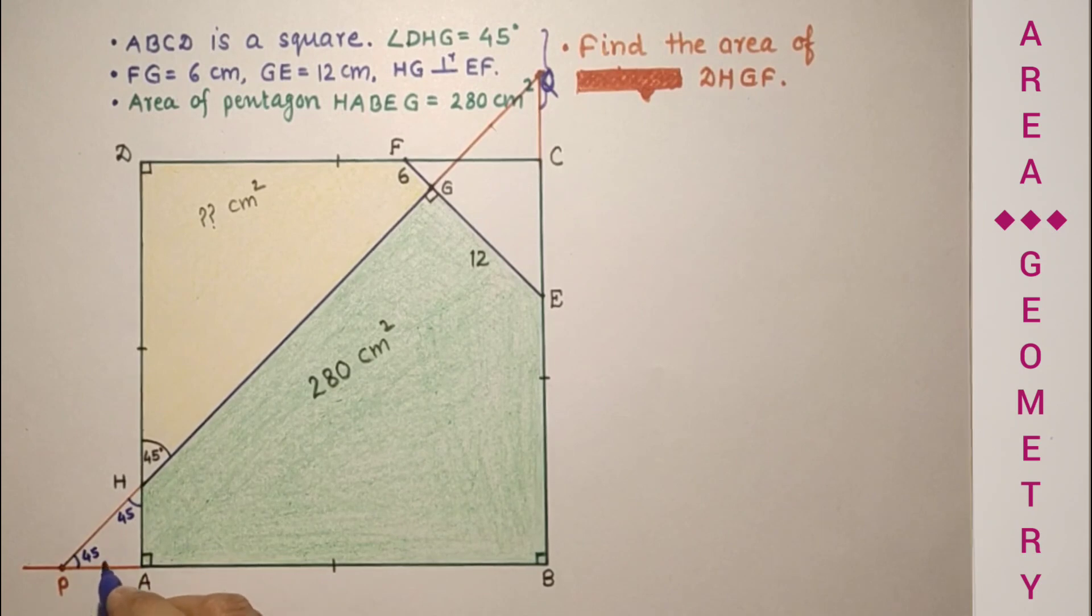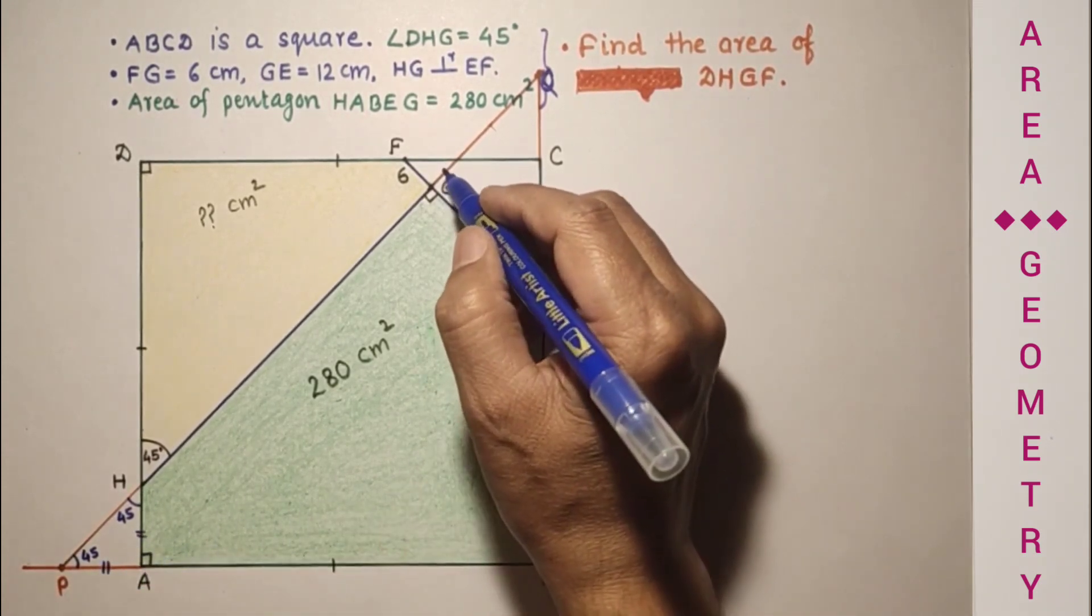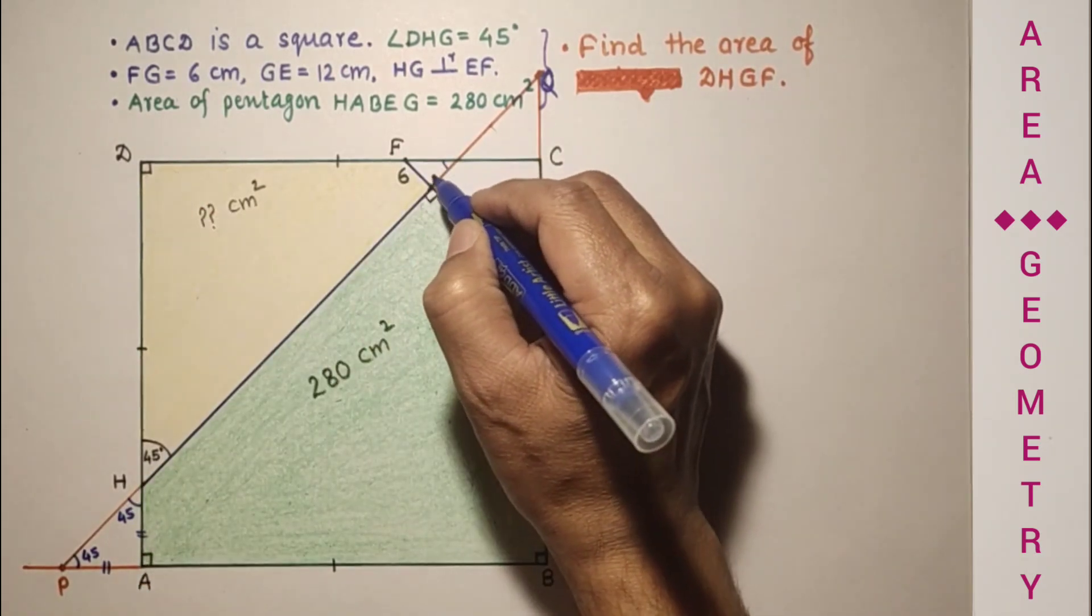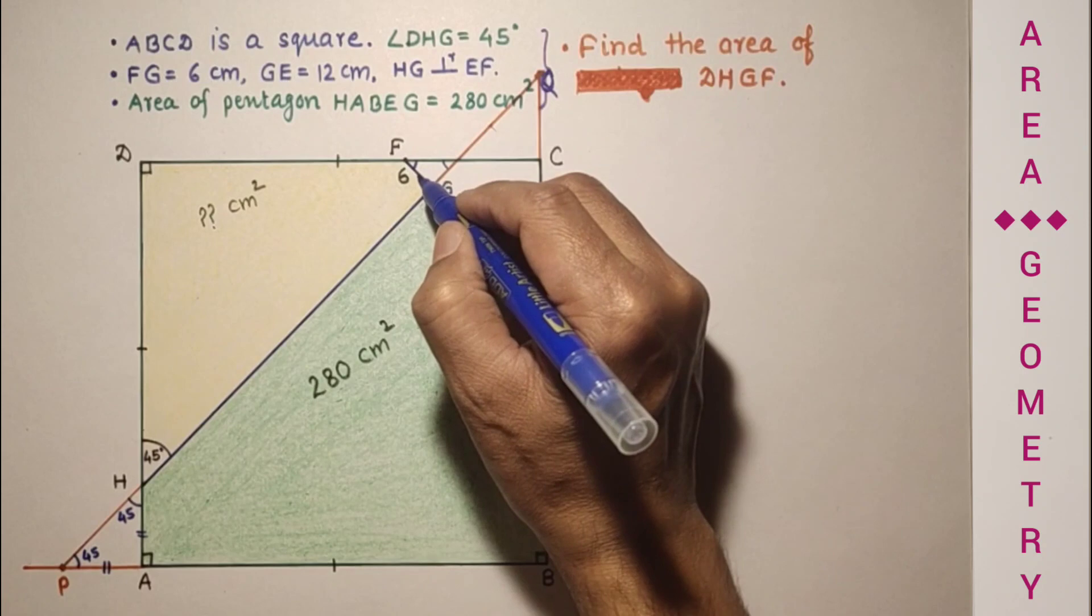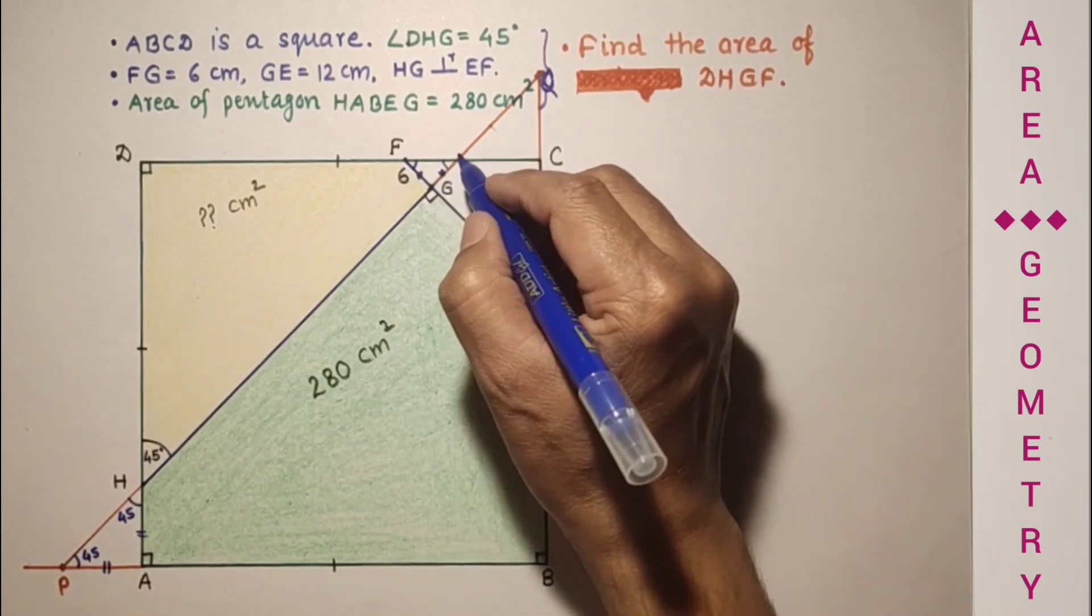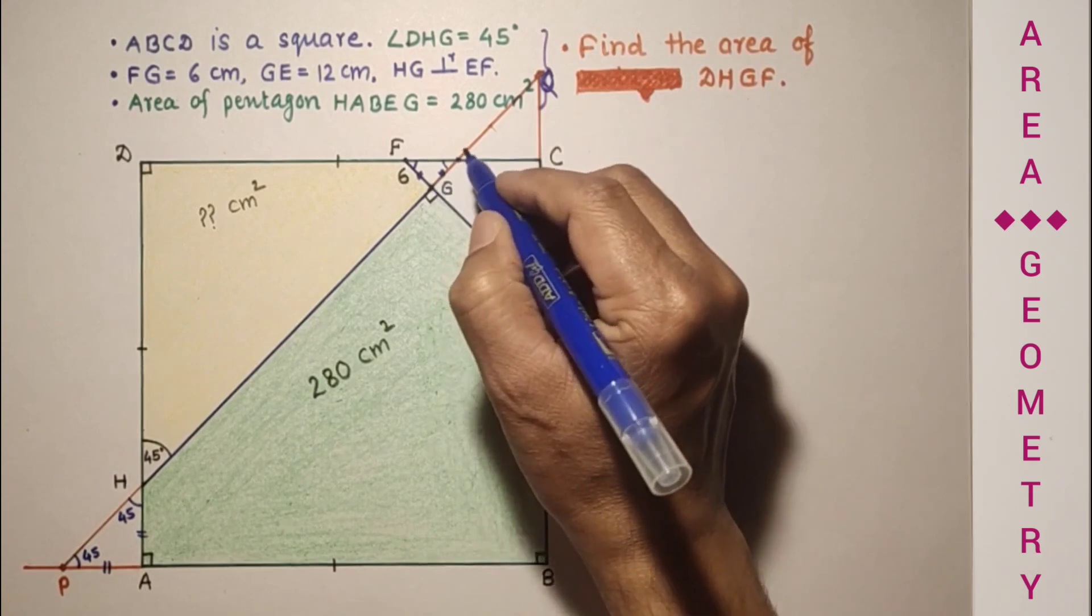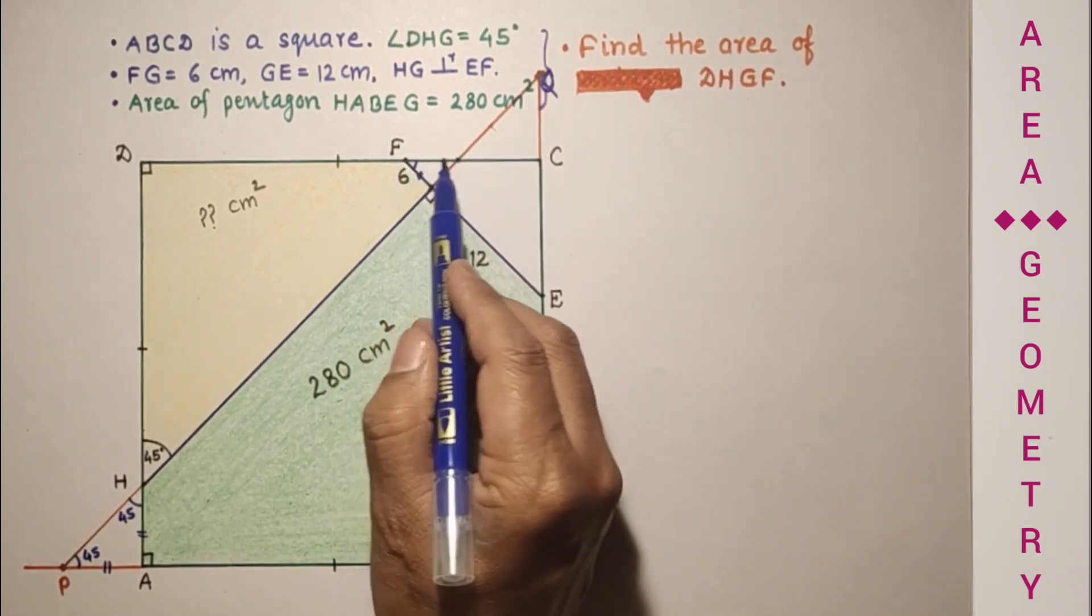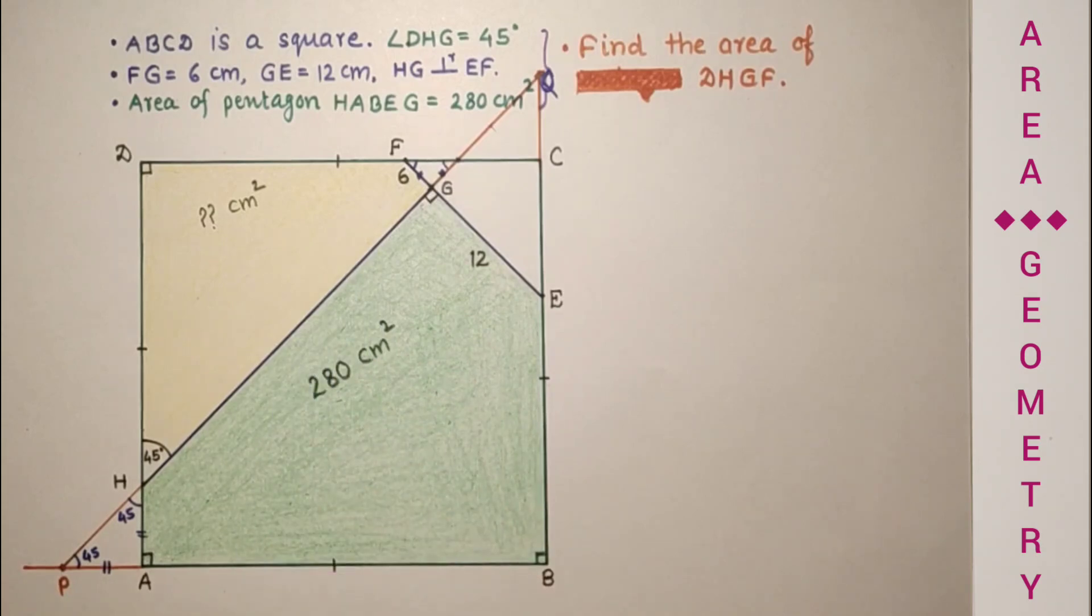This is an isosceles triangle, so these two will be equal. In the same way, this is 45, this is 90, so this is 45. This is 90, this is also 45, so these two will be equal. This is 6, so this will be 6. From here to here it is 6. This is 6, this is 6, so this will be 6 root 2 by Pythagorean theorem.